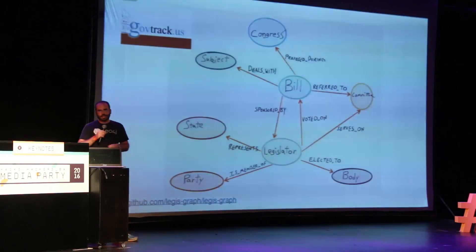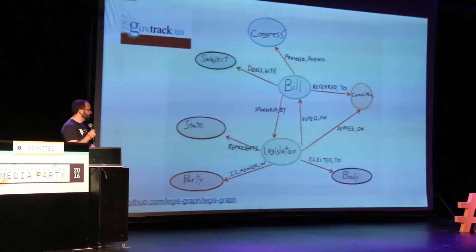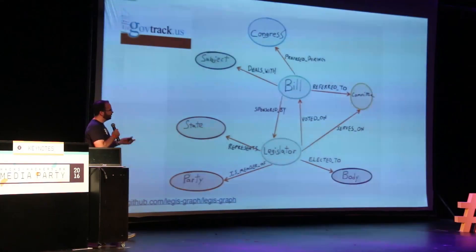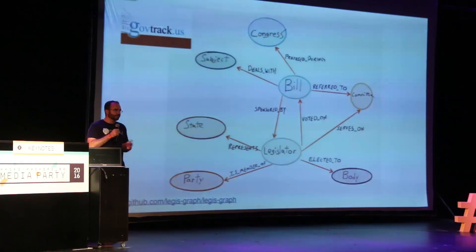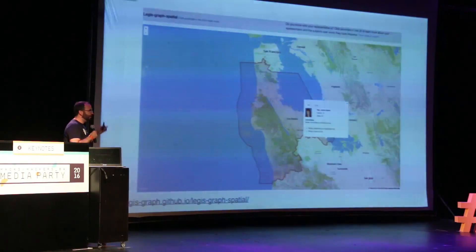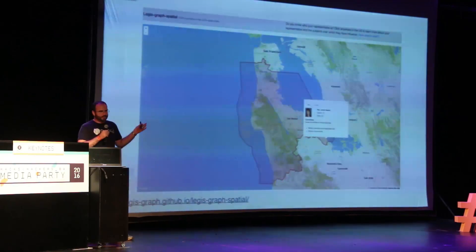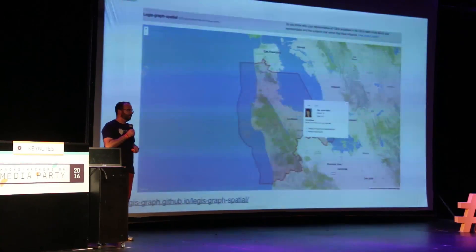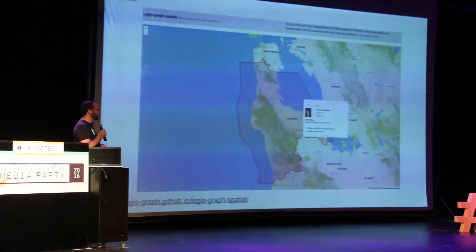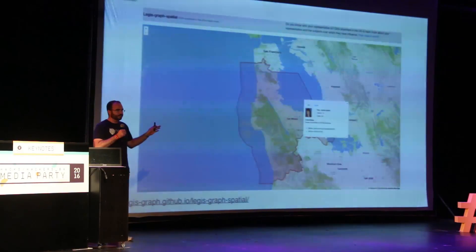We can also model collaboration networks. In this case, we're modeling U.S. Congress as a graph, which we can use to find out which politicians have influence over certain topics in Congress. We can build interactive visualizations on top of this data — a mapping visualization that uses the same data model to find legislators with certain influence over topics, using geographic data to see what districts these legislators represent.